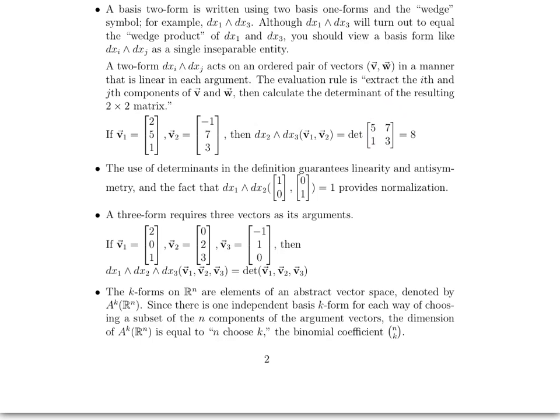The use of determinants in this definition guarantees that this two-form will be linear and antisymmetric, and the fact that dx_1 wedge dx_2 of sequential standard basis vectors equals 1 provides normalization. So far we've discussed one-forms, two-forms, which you should think about both as entities on their own but also as wedge products of two basis one-forms. And then there are three-forms.